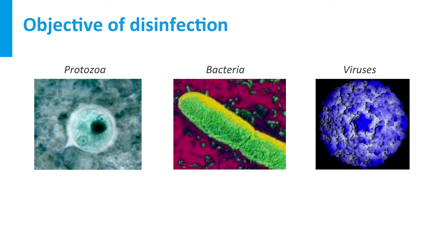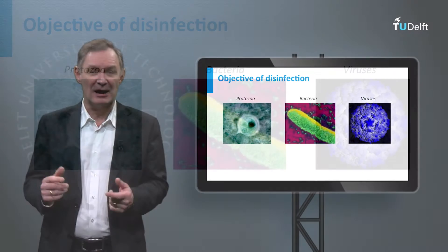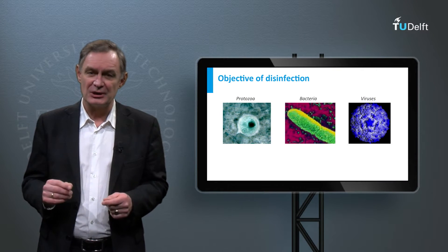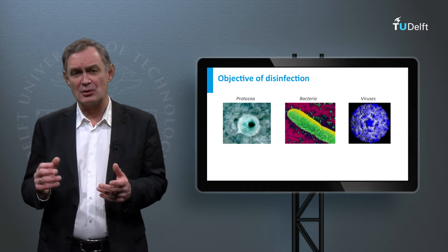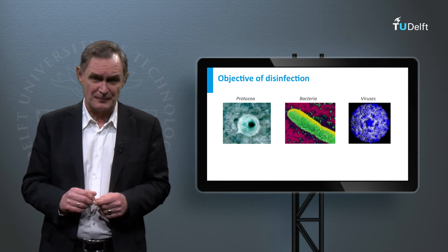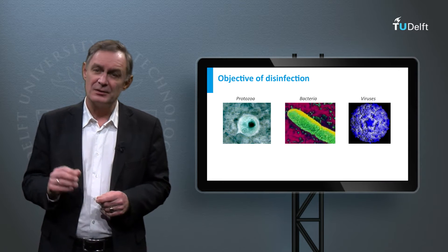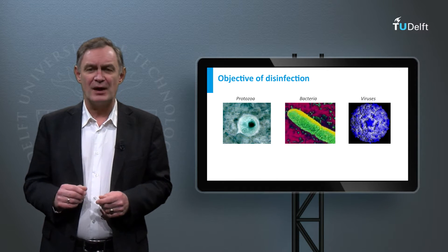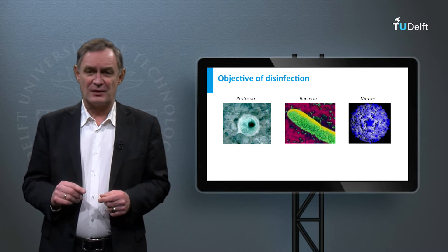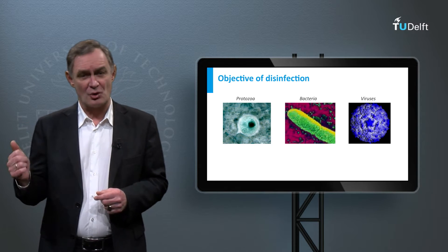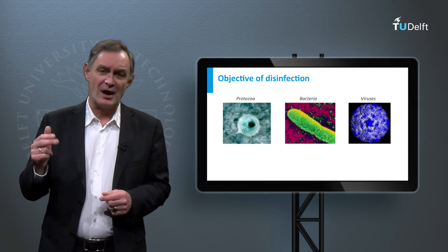Nowadays we know that many pathogenic microorganisms are present in water, which enter the water through feces from humans and animals. Pathogens can cause various health risks, which may become epidemic when spread through drinking water supply. The pathogens can be divided into three main groups, each with their own individual characteristics – protozoa, bacteria, and viruses.